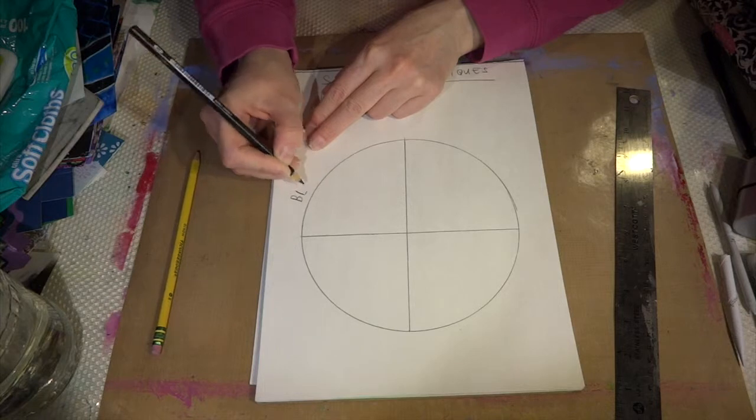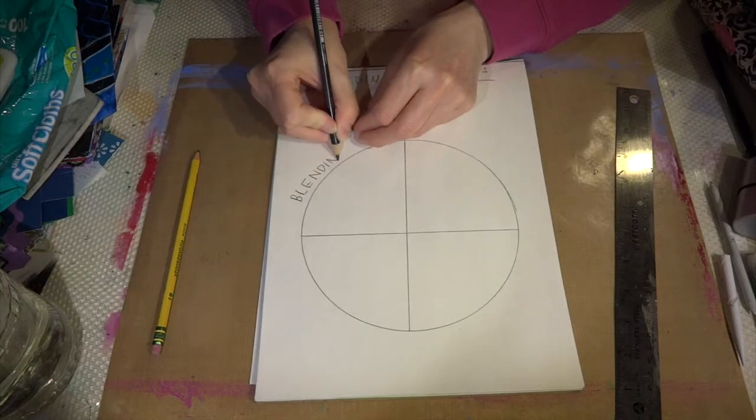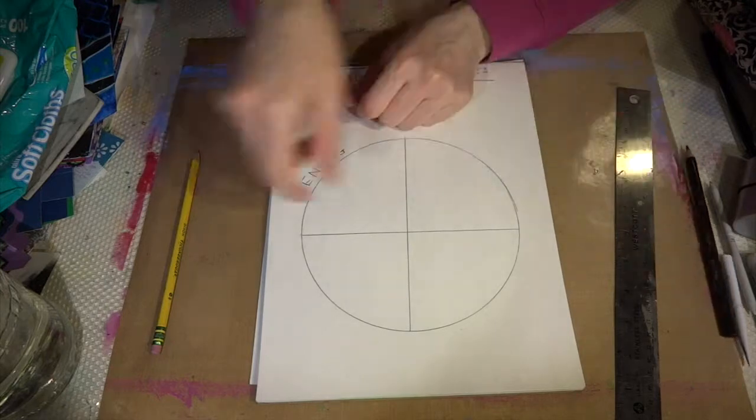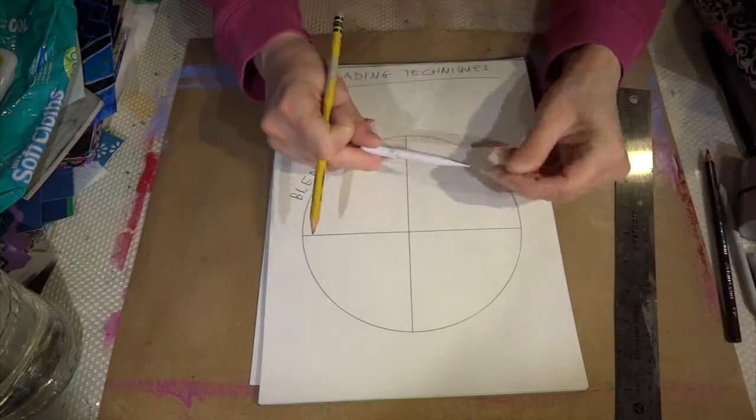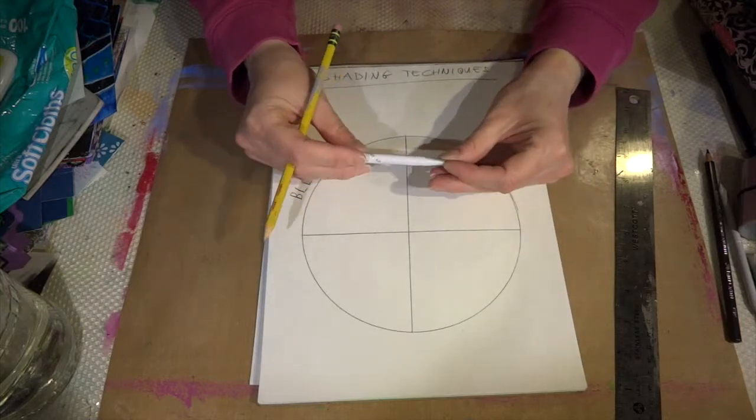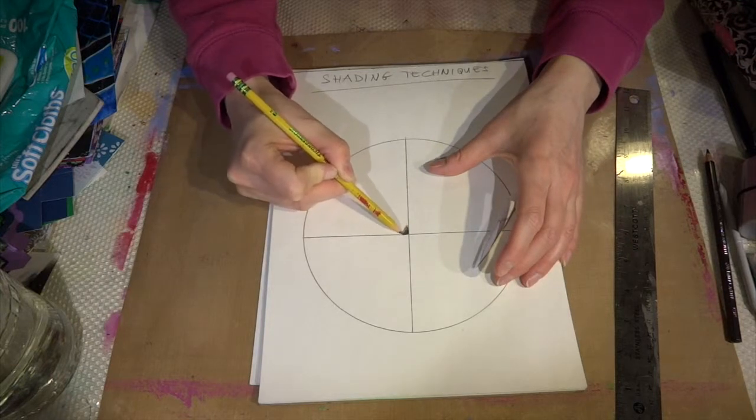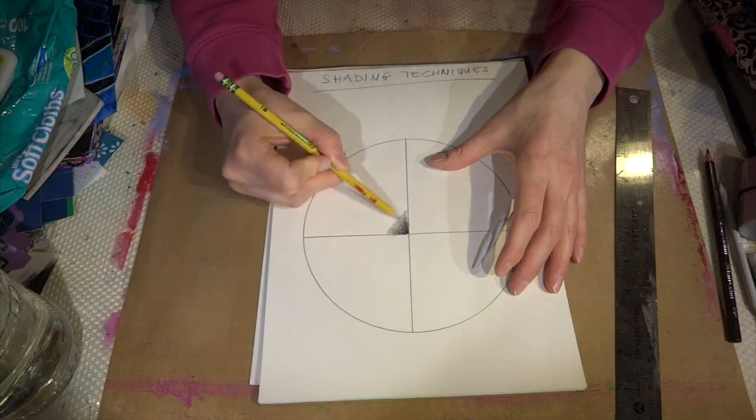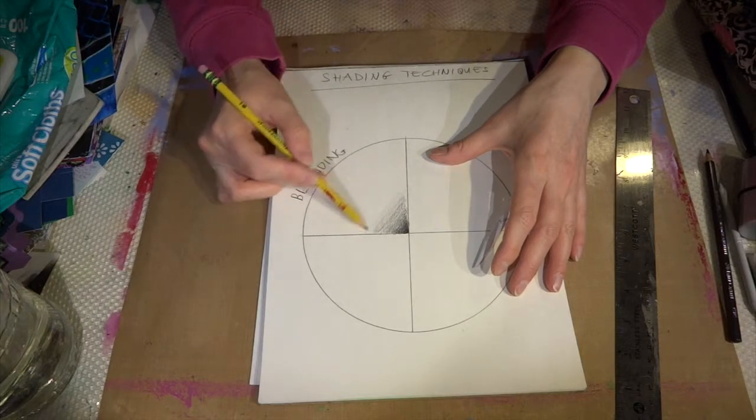What we are going to be doing first is reviewing what blending is. Again, it is changing the values from dark to light gradually. So I'm just going to grab a regular number two pencil and under my desk you will find in one of the containers blending stumps. I'm going to go ahead and do the quick section for blending using my pencil first. I'm going to go from dark to medium, medium to light values.